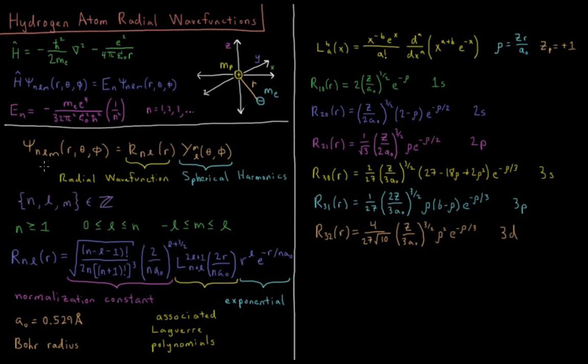These three quantum numbers are all integers. n is greater than or equal to 1. l starts at 0 and goes up to the value of n. m goes from minus l all the way to plus l. So we choose n first, given n we can choose our values of l, given l we can choose our values of m.